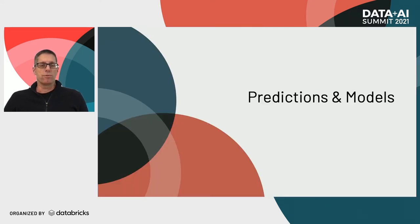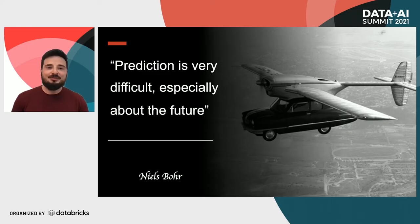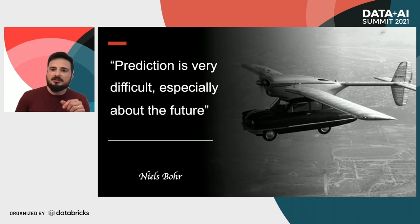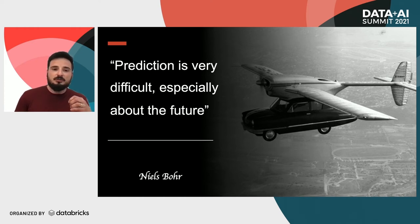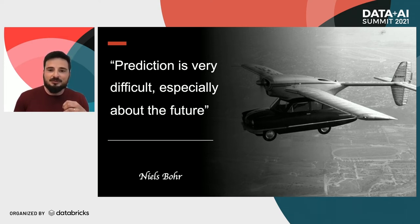Now let's talk about predictions and models — I'll pass it to Max. Prediction is very difficult, especially about the future. If we asked people back in the 1950s how the future would look, they would probably say they'd have flying cars in their garages. But today we see they were wrong — it's very hard to predict so far into the future. The longer the prediction period is, the higher the error rate will be.